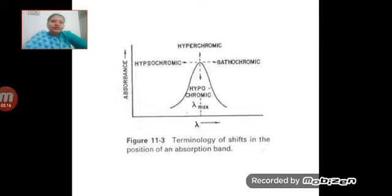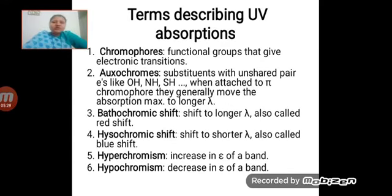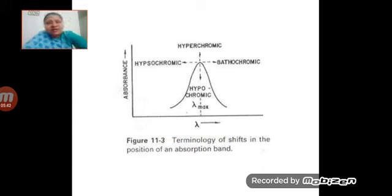Next is the hyperchromic shift, or hyperchromic effect. What happens in the hyperchromic shift is an effect which involves an increase in the intensity of absorption. It increases the intensity of absorption and it occurs because of the introduction of an auxochrome. Here, the intensity of absorption increases, so it is called the hyperchromic shift.